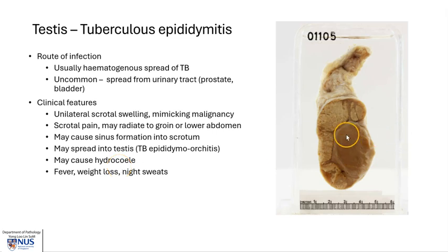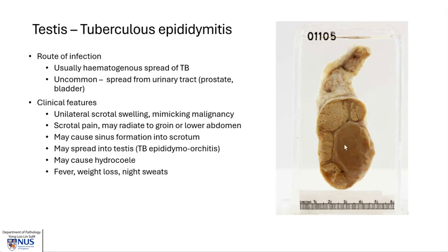These patients, whether they have epididymitis or epididymo-orchitis, can present with a unilateral scrotal swelling, and this swelling can mimic malignancy both clinically as well as on imaging. There may also be associated pain in the scrotum, which can radiate to the groin or lower abdomen. If untreated, there may also be the complication of sinus tracts forming within the scrotal skin.